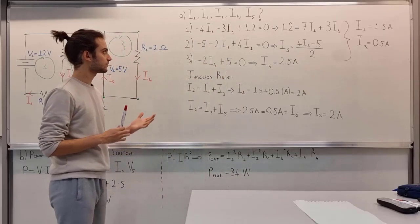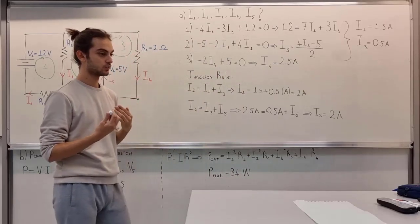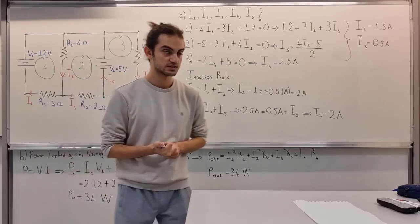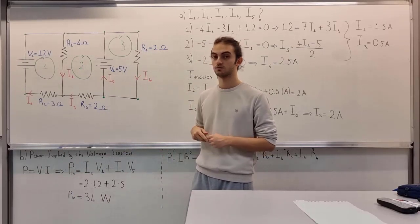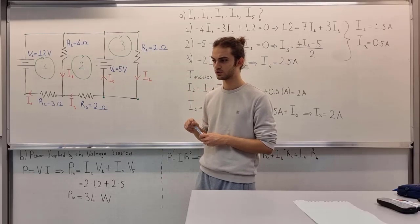In option A, we're asked for the currents. What should we do? What comes to your mind first? As you can see, we can think of Kirchhoff's law, which has two laws: junction rule and loop equations.